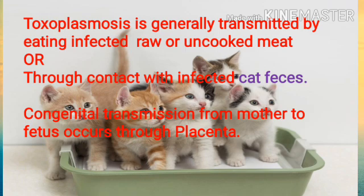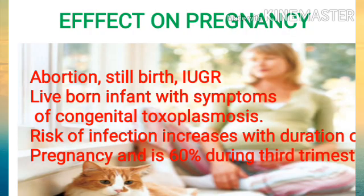Generally, toxoplasmosis is transmitted by the oral route — by eating uncooked or infected raw meat. It may also spread through contact with infected cat feces, which is the most common form of transmission of this disease. The third mode is congenital transmission from mother to fetus through the placenta. These three are the main modes of transmission of toxoplasmosis.